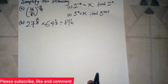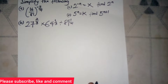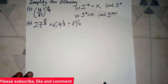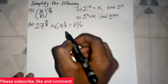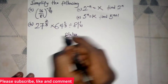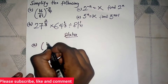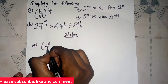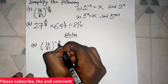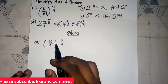Hello everyone, welcome to another section. Today we are going to solve a question on indices. Let's look at the first question: we have a being equal to 16 over 81 to the power negative 3 over 4.